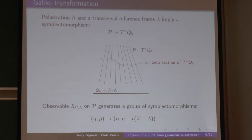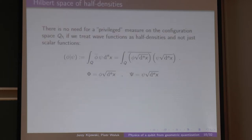Starting with a phase space which has no linear structure, already by the choice of this Lagrangian foliation I have acquired a linear structure of each fiber separately. This is a really trivial observation, however it makes life much, much simpler.